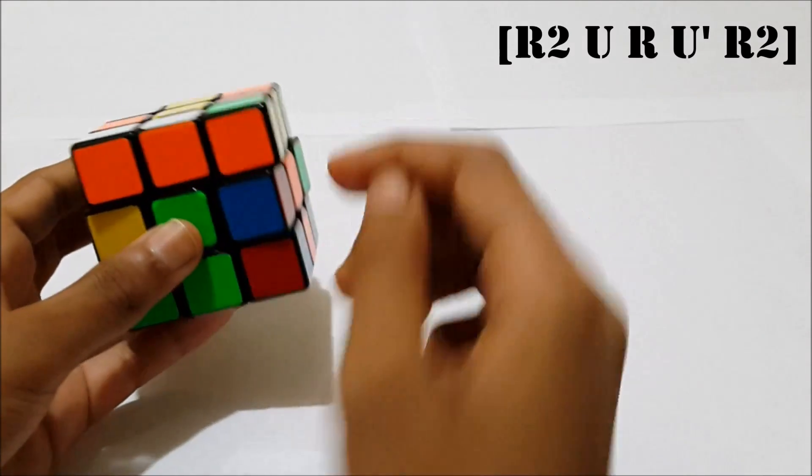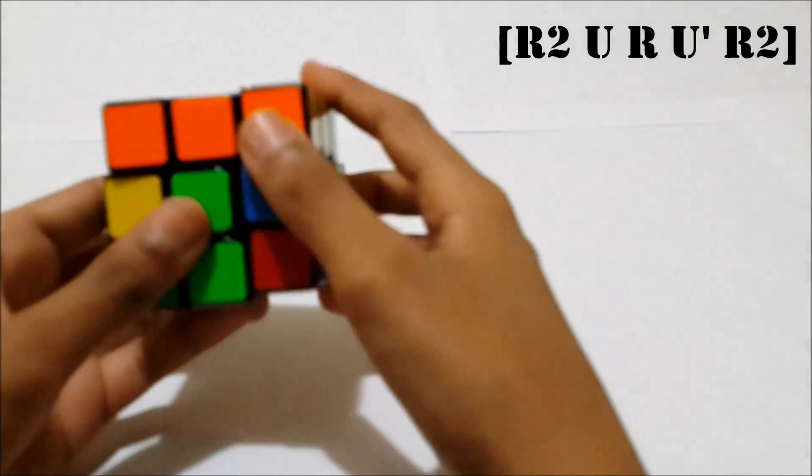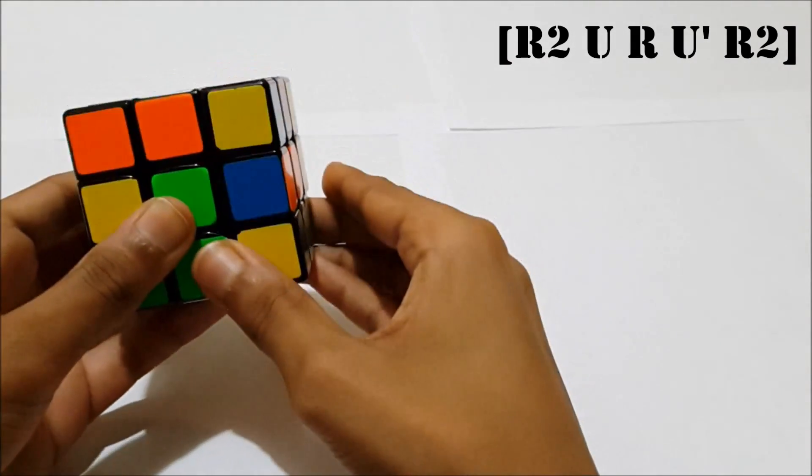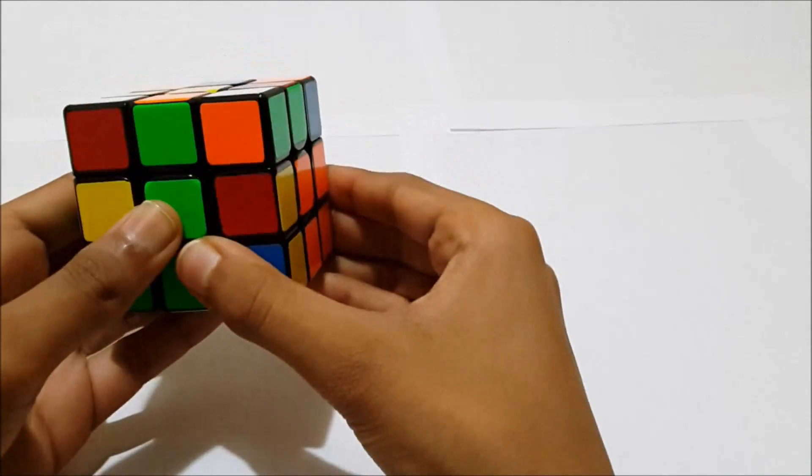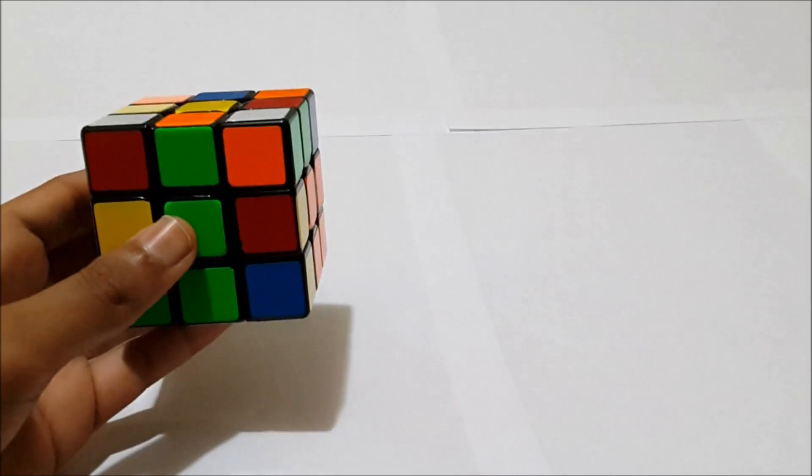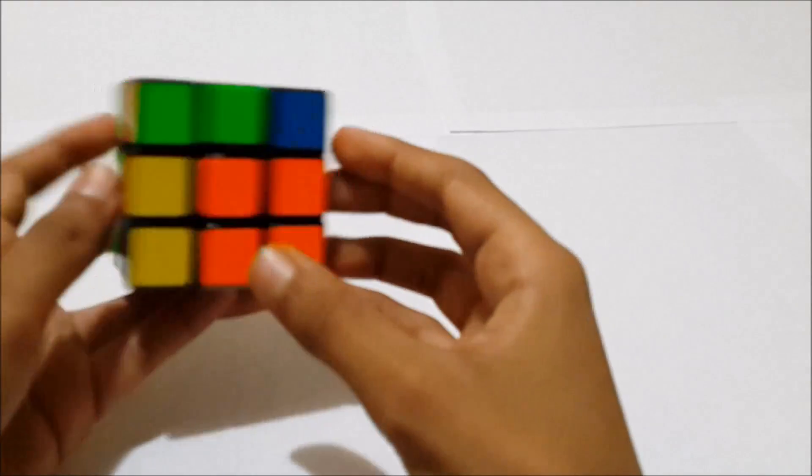And since it's in front, we're going to do a U to bring it forward again, then an R to bring the respective edge up, U' to pair them, and R2 to insert them. Again, I'll leave all these algorithms in the description. So that's that case.